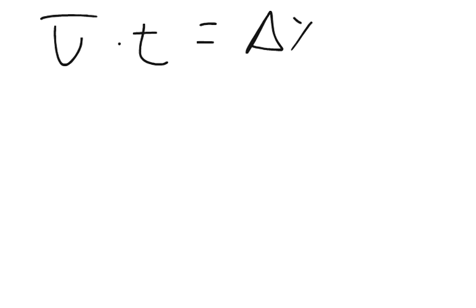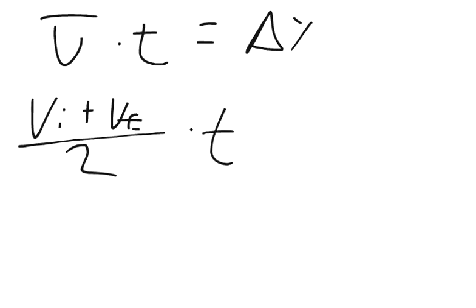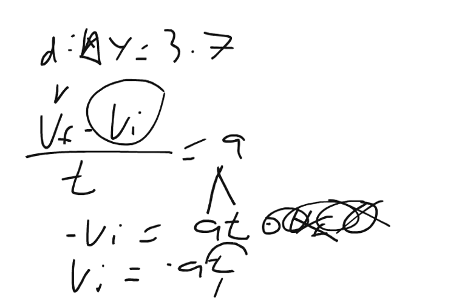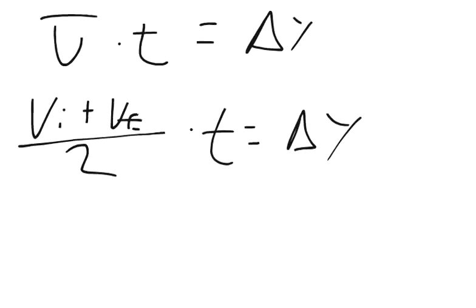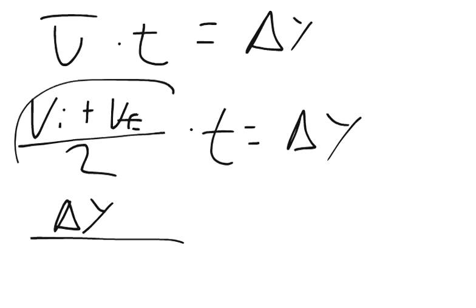Well, what is average velocity? Let's define it. Average velocity, if you remember, was the initial velocity plus the final velocity divided by 2 times time equals our change in y. Well, we want to get rid of time. In our original equation, we want to find a way to get rid of that and put in terms that we know. So we can solve for time.